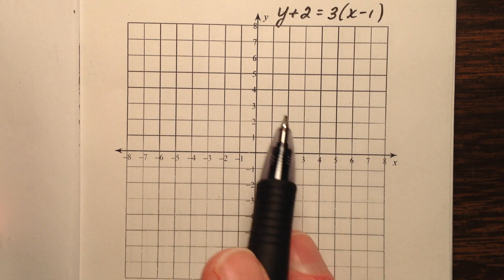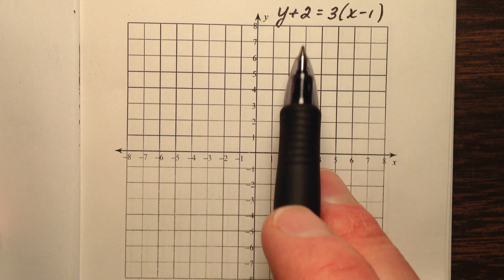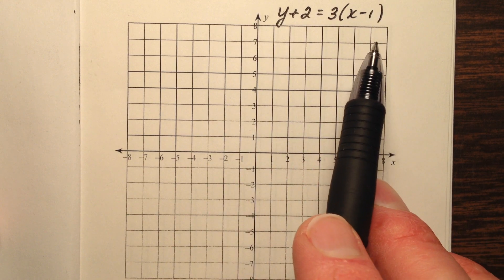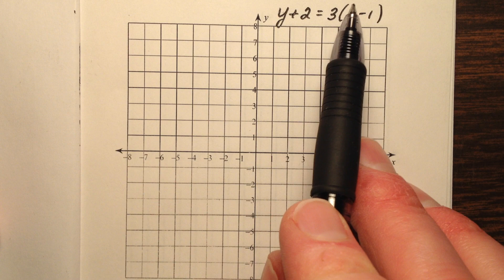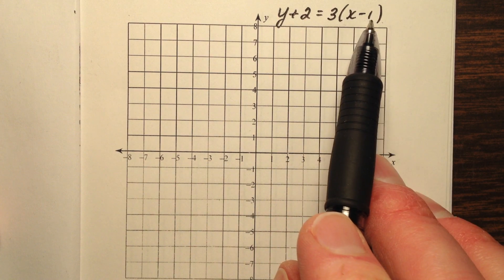In this example, we're going to graph a line given to us in point-slope form by the equation y plus 2 equals 3 times the quantity x minus 1.